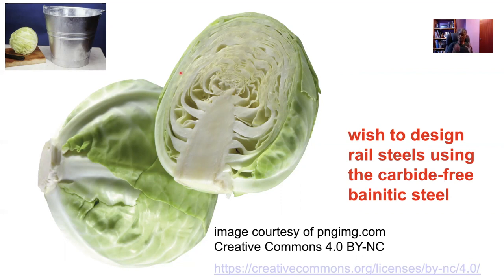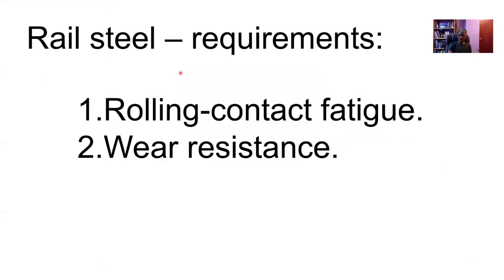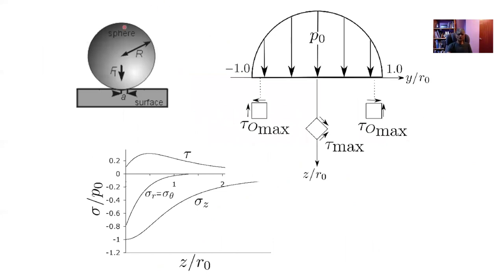Two of the main requirements for rail steels are rolling contact fatigue and wear resistance. For rolling contact fatigue, if you have a sphere in contact with a flat surface - imagine that's a railway wheel and that's the rail - the shear stress that you produce as a result of that contact stress is actually a maximum at a certain depth below the surface, not at the contact zone. Every time a wheel goes over a rail it creates a pulse of stress underneath the surface. The damage accumulates and then you get a fatigue crack growing from there and you get a spalling of the rail surface. That's a bad event.